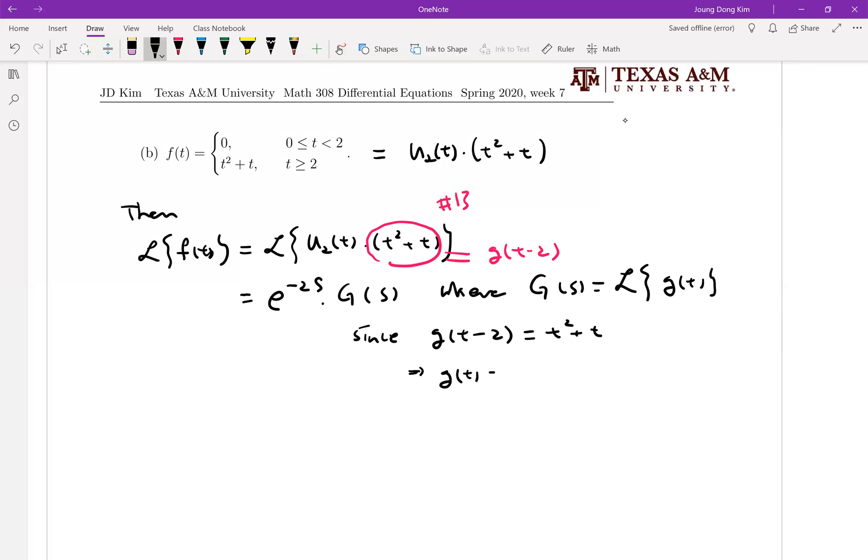Then g of t is t plus 2 squared and t plus 2, which is t squared, 4t plus 4 plus t plus 2. That is t squared plus 5t plus 6.